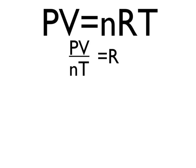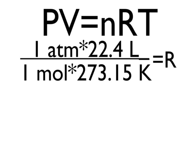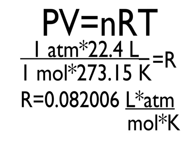By rearranging the original formula, we get PV over nT equals R. We plug in one atmosphere for P, 22.4 liters for V, one mole for N, and 273.15 Kelvin for T. By dividing, we get 0.082006223686619073768991396668497 liters atmospheres over moles Kelvin, which rounds off to 0.08201 liters atmospheres over moles Kelvin.